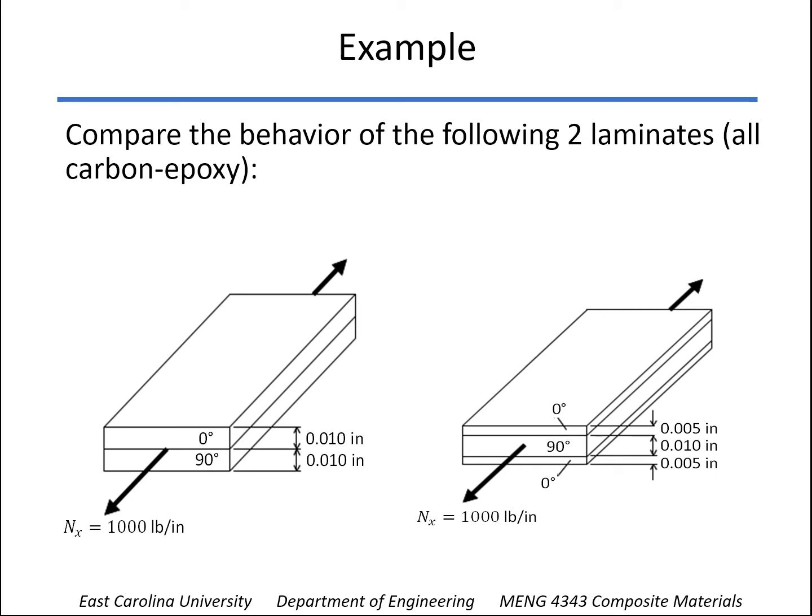But on the left, the zeros are on top of the nineties, so it's non-symmetric. And on the right, we'll call it laminate B. It is symmetric. We split the zeros to be top and bottom and put the nineties in the middle.